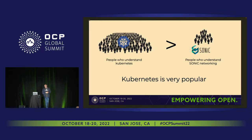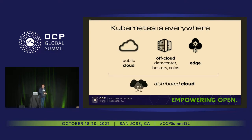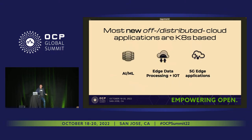Kubernetes is extremely popular. The number of people who understand and get Kubernetes, especially outside of this room, is drastically larger than the number of people who understand networking in general. Kubernetes is everywhere. People deploy applications in the public cloud, off cloud, in data centers, hosters, colos, at the edge. Most of the new stuff is basically all deployed on Kubernetes. If you're deploying AI or ML type of stuff, or edge data processing, it's all going to be Kubernetes-based in the very near future if it already is not.